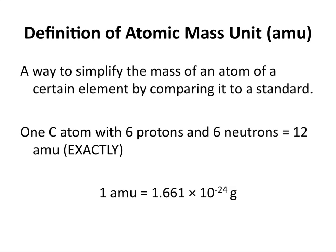An AMU is a way to simplify the mass of an atom of a certain element by comparing it to a standard. By definition, one carbon atom with six protons and six neutrons equals exactly 12 AMUs. By this definition, one AMU is equal to approximately 1.661 times 10 to the negative 24th grams.